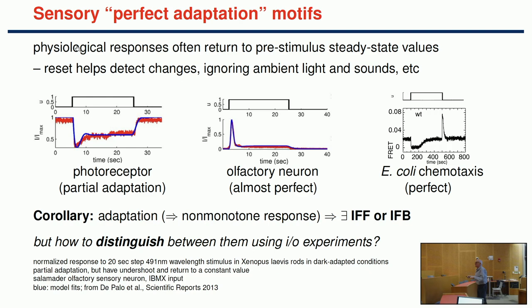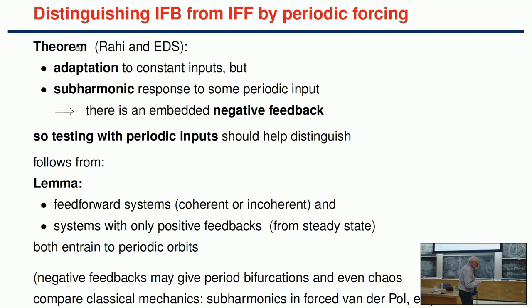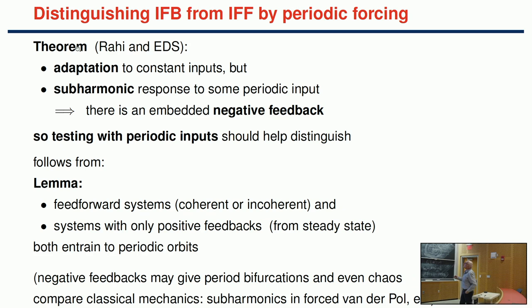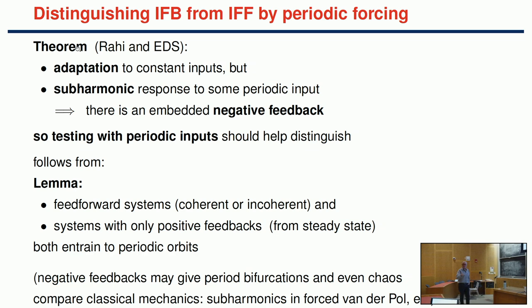The theorem tells you there's either an incoherent feedforward loop or an incoherent feedback loop—but which one? We had a paper with Rahi, now at EPFL in Lausanne, where we proved: if you have adaptation and then test the system with a periodic input and get a sub-harmonic response, then you must have a negative feedback loop, not an incoherent feedforward loop, because a feedforward loop would never give you sub-harmonic responses.